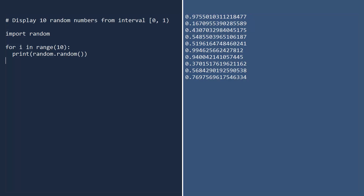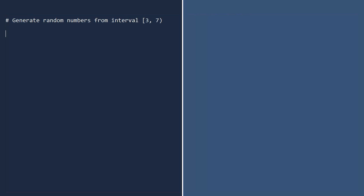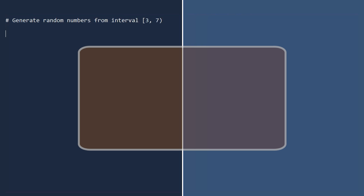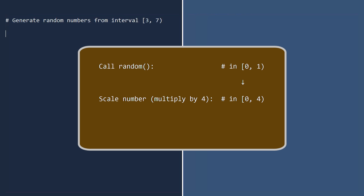What if you want to generate a random number from a different interval? For example, how would you generate random numbers from the interval 3 to 7? There are several ways. For starters, you could write your own function. To do so, start by picking a random number in the interval 0 to 1 using the random function. Next, multiply by 4 so the random number is in the interval 0 to 4. We multiply by 4 because that's the width of the interval 3 to 7. Finally, add 3 to shift the number to the target interval 3 to 7.